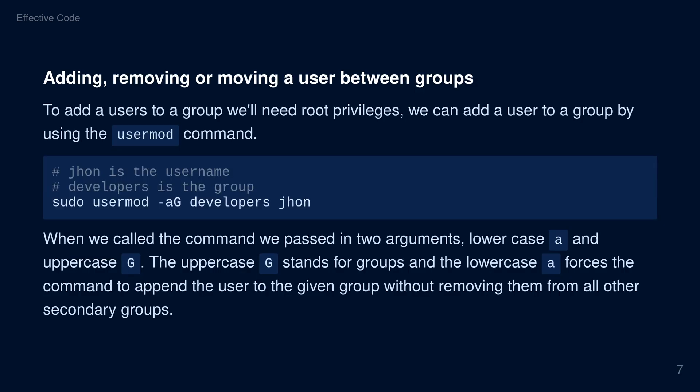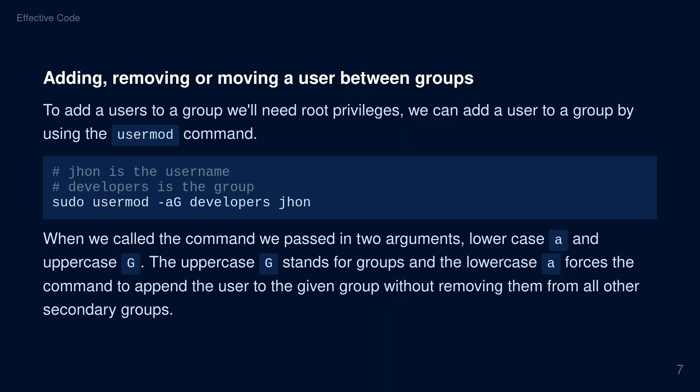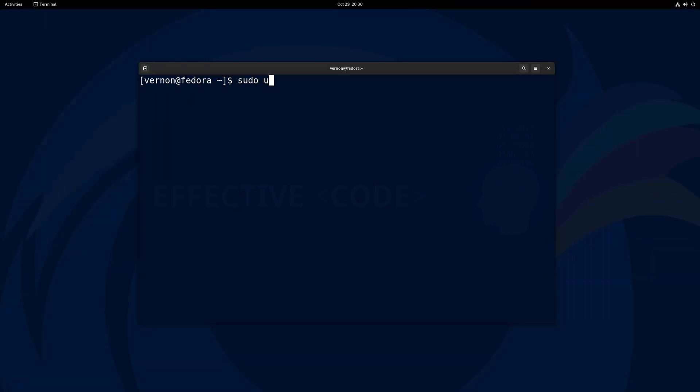Adding, removing or moving a user between groups. To add a user to a group, we'll need root privileges. We can add a user to a group using the usermod command: sudo usermod -aG followed by the group name and then the username. We passed in two arguments, lowercase a and uppercase G. The uppercase G stands for groups, and the lowercase a forces the command to append the user to a given group without removing them from all other secondary groups. This allows us to assign a user to specific groups and at the same time exclude them from others, essentially allowing us to move them across groups. Here's an example of adding a user to specific secondary groups: usermod -G groupA,groupB,groupC followed by the username.